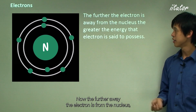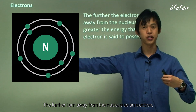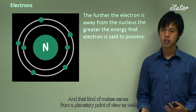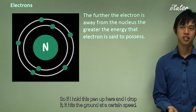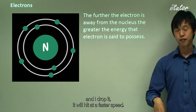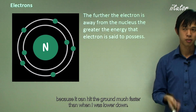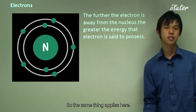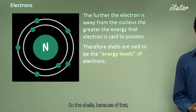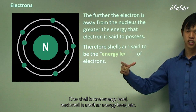The further away an electron is from the nucleus, the greater the energy it possesses. Like dropping a pen from a higher height — it hits the ground faster, indicating more energy. So shells are also called energy levels: one shell is one energy level, the next shell out is another energy level, and so on.